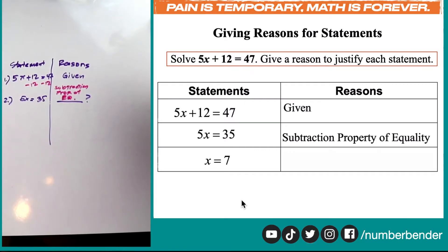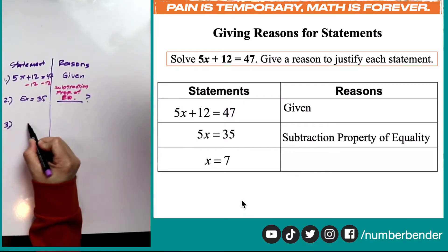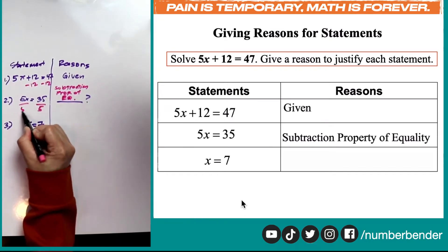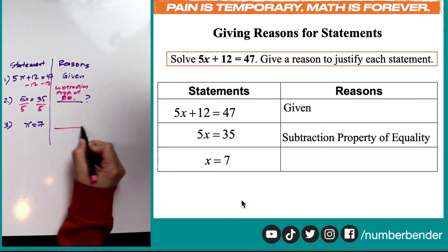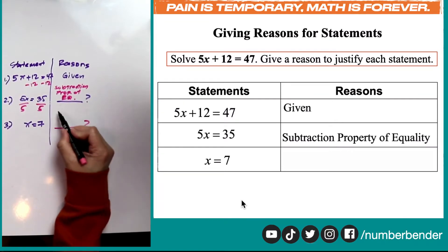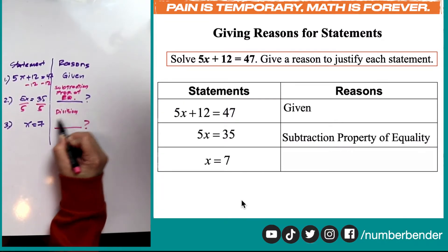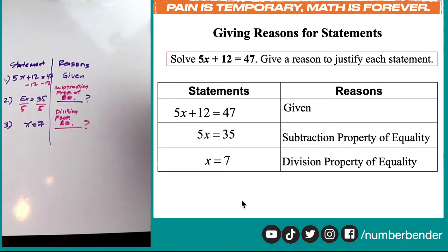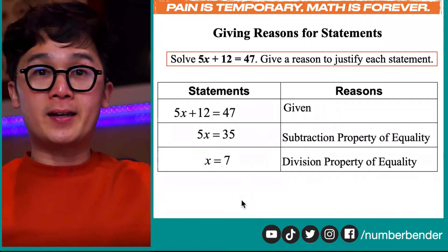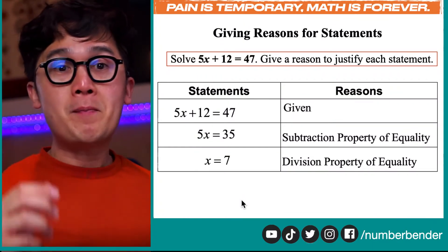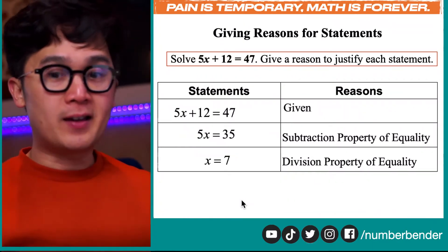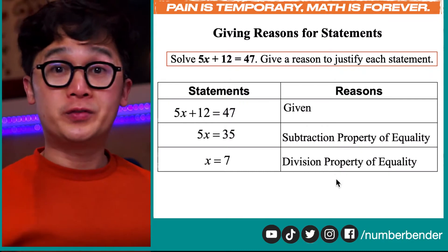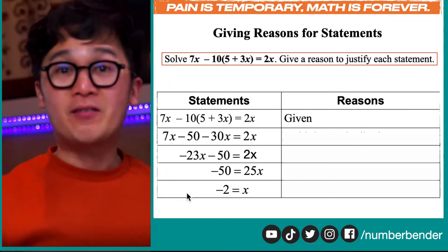Our third reason shows how we get from line 2 to line 3, which is x is equal to 7. To do that, we simply divided both sides by 5, so our reason for line 3 is the division property of equality. This is how basic it is to write a two-column proof. The challenge is to remember as many properties as you can to complete the right-hand side of your column proof.